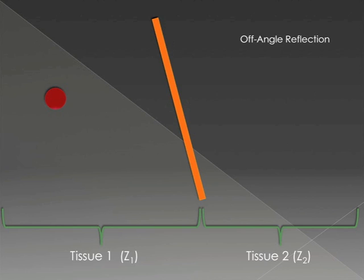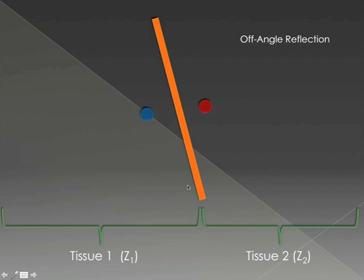What happens if the tissue interface isn't directly perpendicular to the path of the beam? That's when you get into the situation called off-angle reflection. The sound wave is transmitted, but its path is changed, and the reflected sound wave actually does not go straight back towards the transducer but is reflected off to the side. This particular off-angle reflection may give artifacts, but it doesn't necessarily contribute a lot to image generation.